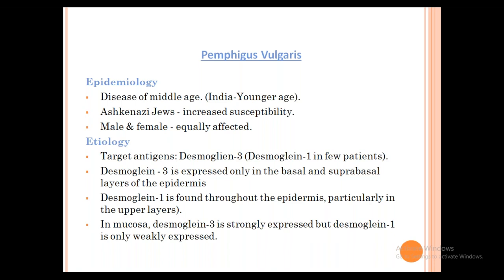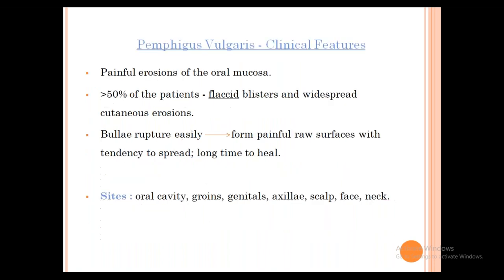In Pemphigus Vulgaris, the patient's history typically starts with formation of oral ulcers — intractable, difficult to treat — followed by flaccid skin lesions. Since Desmoglein 3 is targeted and mucosa only has Desmoglein 3, oral lesions are prominent. In Pemphigus Foliaceus, since Desmoglein 3 is not targeted, oral erosions are very rare. This is an important distinguishing point.